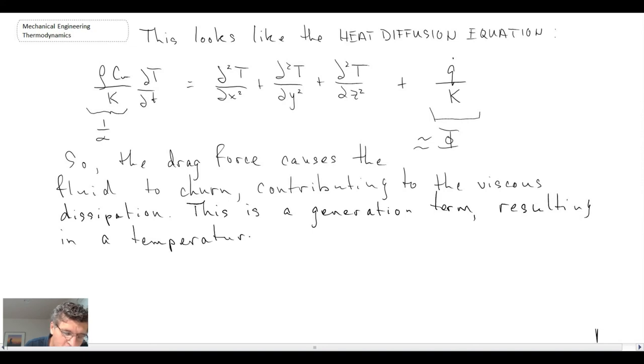Where does that work go ultimately? It goes into random velocity fluctuations, which then through the viscous dissipation term are converted into velocity shear and thermal energy. And once it goes into thermal energy, it raises the temperature of the fluid.